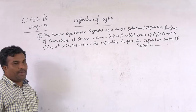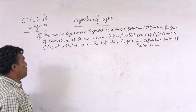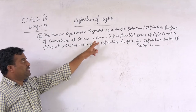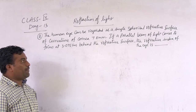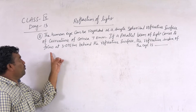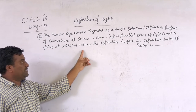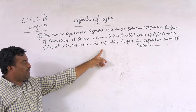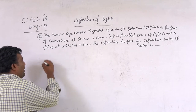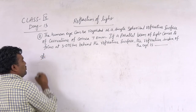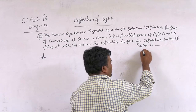The human eye can be regarded as a single spherical refractive surface with radius of curvature of cornea 7.8 mm. If a parallel beam of light comes to focus at 3.075 cm behind the refractive surface, the refractive index of the eye is — so, first of all, I am taking the refractive surface.